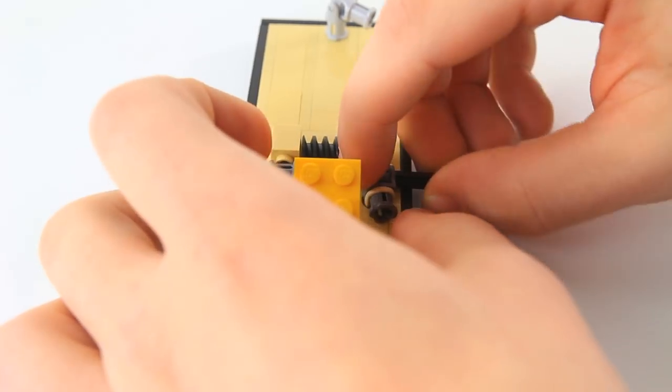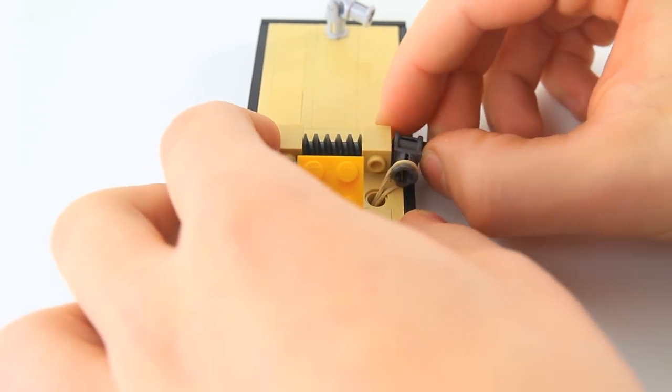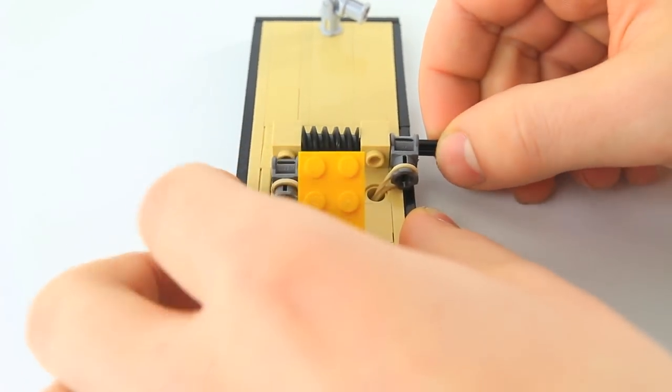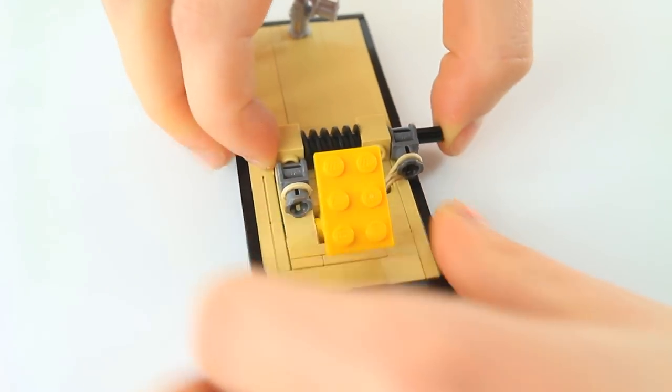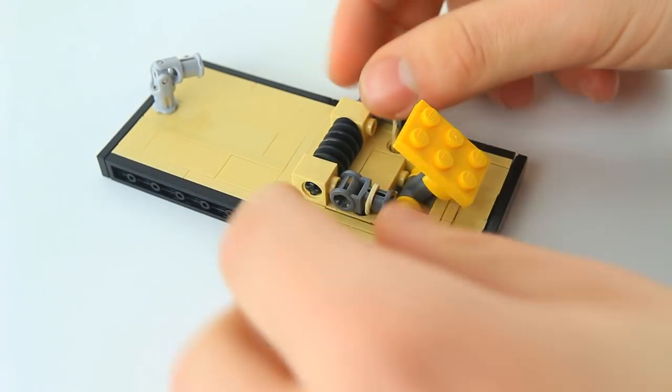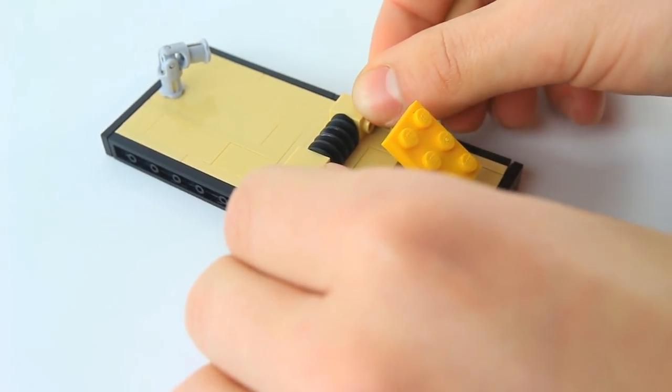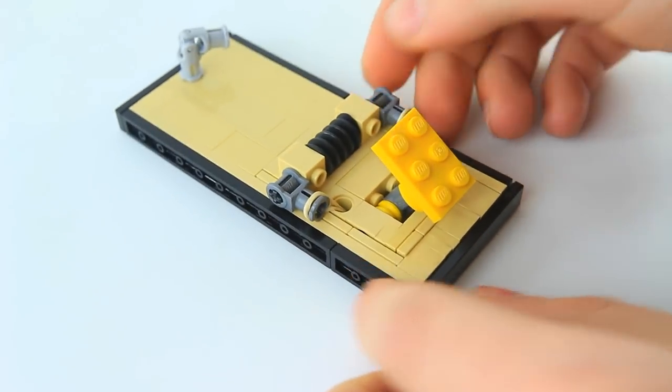Then you are going to take a six stud long axle and wedge it through this dark gray piece. And then we are going to move this two unit part over here so it can go through one of the holes of the 1x2 bricks with two holes as well as going through the worm gear as well as going through to the other side. Now we are going to take the other dark gray piece and make sure the axle goes through that. I hope that was clear enough.